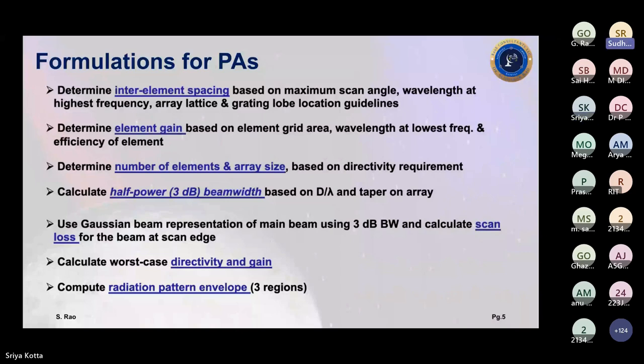You then determine scan loss based on the coverage area and 3 dB beamwidth — equations are provided for that. You calculate the worst-case directivity and gain over the worst case of the scan region. The patterns are computed over three regions: the main lobe region, modeled as a Gaussian beam, which cuts off at the peak sidelobe level; then the near inside lobes are approximately constant; and finally a 20 log decay for the far outside lobes.